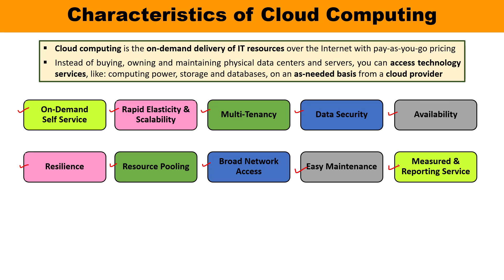The next characteristic is measured and reporting service. This feature allows you to monitor, control, and optimize how much cloud resources you are using. There is also a metering capability — just like a regular meter you can read, the metering capability in cloud computing is placed at the abstraction level of the application service and gives transparency. Transparency about what resources are being used is available to both the service provider and the clients, and it is helpful in monitoring, billing, and ensuring optimum usage of resources.